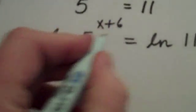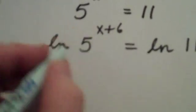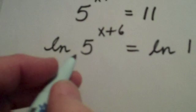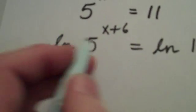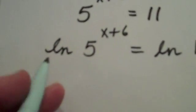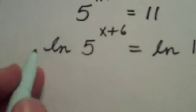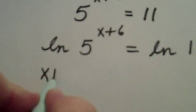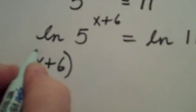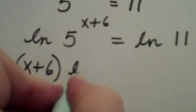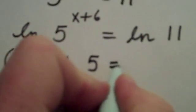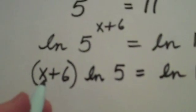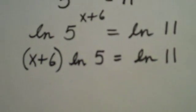Now, remember we can use the power rule for logs. I tell my students, now there's a ladder, the cat can come down out of the tree. So x plus 6 slides down in front by using the log ladder. x plus 6 quantity times the natural log of 5 equals the natural log of 11.